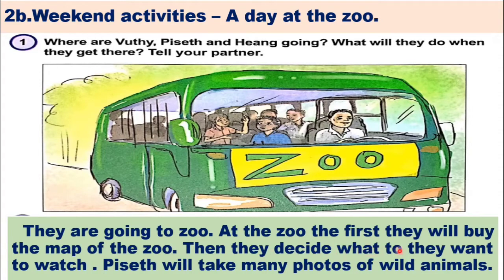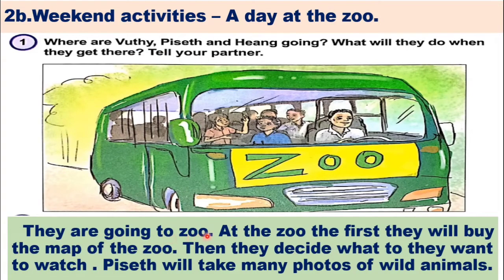Then they decide what they want to watch. This is what we are going to do when we are going to the zoo. We will take many photos of wild animals. Now read all together again. We are going to the zoo. Then they decide what they want to watch. We will take many photos of wild animals.